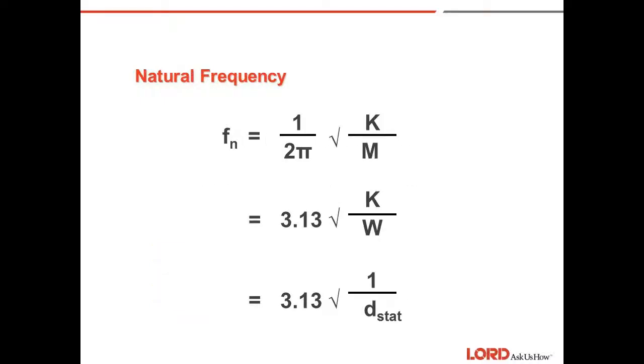The natural frequency. If a load or deflection is applied to our simple spring mass system and then released, the mass will vibrate at a constant rate. We call this condition resonance, and the vibration rate is called the natural or resonant frequency. Natural frequency, Fn, is given by the formula 1 divided by 2 pi times the square root of k over m. This is always measured in cycles per second or hertz.